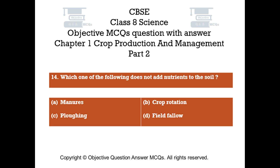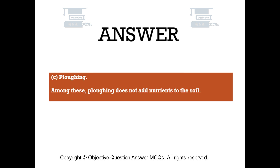Question number 14. Which one of the following does not add nutrients to the soil? Option A: Manures. Option B: Crop rotation. Option C: Plowing. Option D: Field fallow. The right answer is Option C, Plowing. Among these, plowing does not add nutrients to the soil.